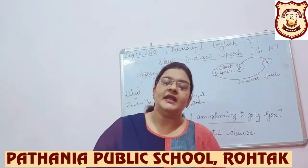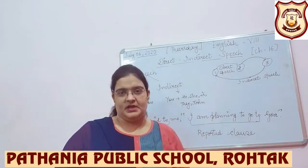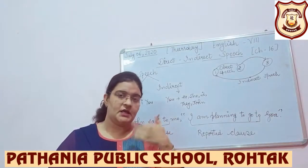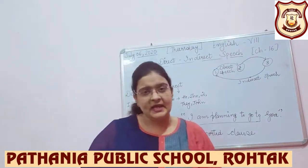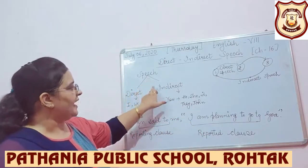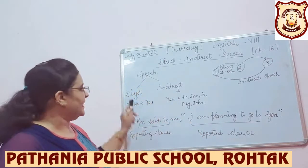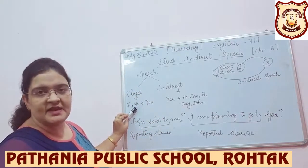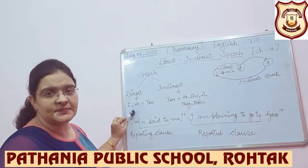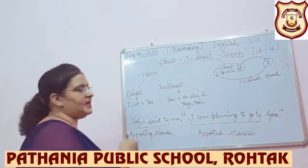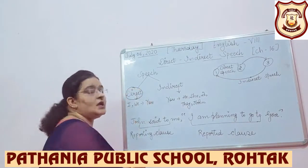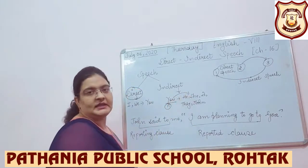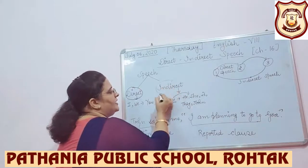There are two ways to speak something. I am talking to you — I is first person, you is second person. That is direct speech. Speech is divided into two parts: direct speech and indirect speech. First person means I and we. If first person talks to second person, that is direct speech. If second person talks to third person, then it is called indirect speech.